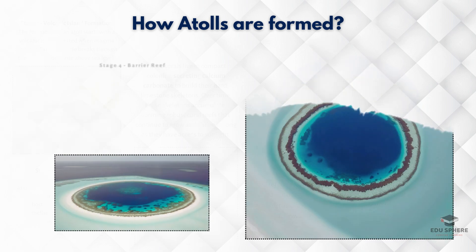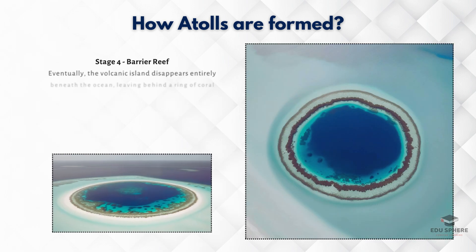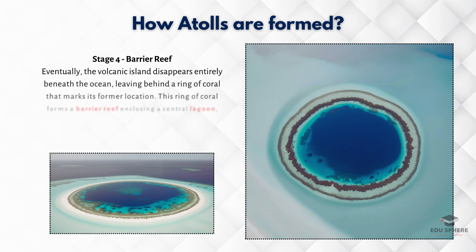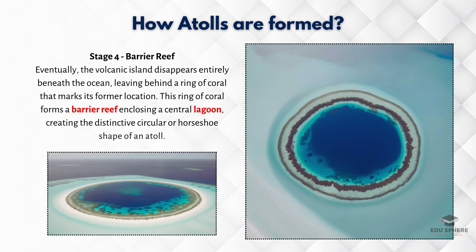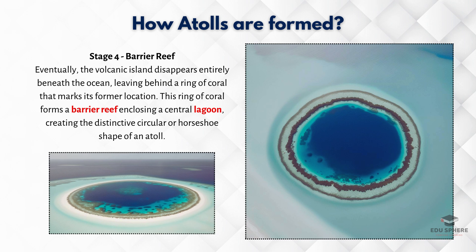Eventually, the volcanic island disappears entirely beneath the ocean, leaving behind a ring of coral that marks its former location. This forms a barrier reef around a central lagoon, creating the distinctive circular or horseshoe shape of an atoll.